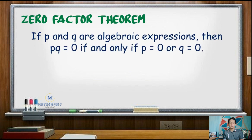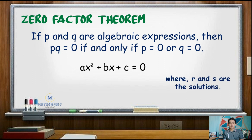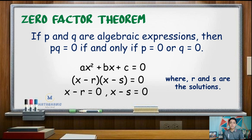Factoring, or the zero factor theorem, states that if p and q are algebraic expressions, then p times q is equal to zero if and only if p is equal to zero or q is equal to zero. This means that if ax squared plus bx plus c, our quadratic expression, can be written as a product of two first degree polynomials, then the solutions can be found by setting each factor equal to zero.